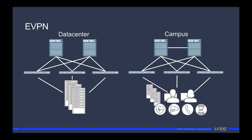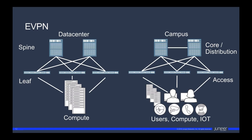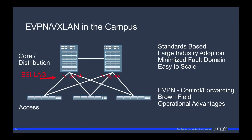VLAN limitations — VLANs can only scale to 4K. Micro-segmentation. Getting rid of spanning tree. Flexibility — any port on any VLAN, anywhere. Their customers are demanding too. The data center and the collapsed campus core are not too different. In the data center we have spines; in the campus, core distribution. There are leaves, and there are access switches. There's compute in the DC, and there are users, compute, and IoT in the campus. Similar set of challenges: layer 2 adjacency, VLANs, getting rid of spanning tree, limiting flooding and learning, as well as the flexibility our users require. With so many similarities, why not leverage EVPN in the campus and all the benefits that EVPN has to offer?